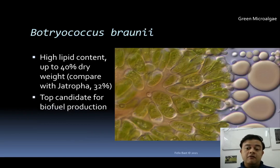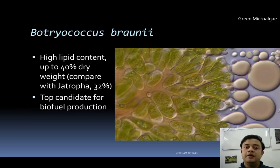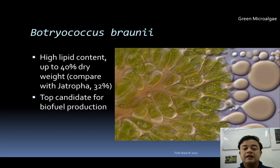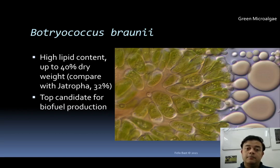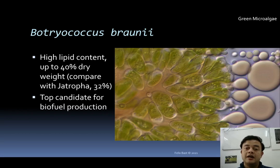Another important microalgae is Botryococcus braunii, which is very important for biofuel production because of its high lipid content — almost 40% of its dry weight is lipids. Compare this with the oil plant Jatropha, an angiosperm, where 32% of dry weight is lipid. Botryococcus braunii is better: it doesn't require land real estate like Jatropha does, and while Jatropha needs fresh water for plantation, Botryococcus can be grown in a photobioreactor with far less water. It is a top candidate for biofuel production.